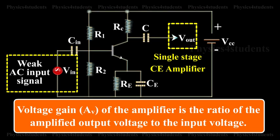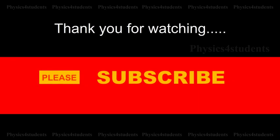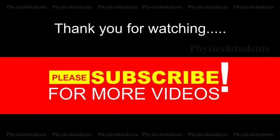Voltage gain AV of the amplifier is the ratio of the amplified output voltage to the input voltage. Thank you for watching. Please subscribe to this channel for more videos.